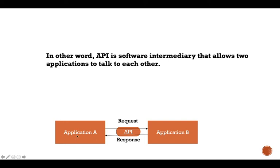Here you can see we have Application A and we have Application B. Application A wants to communicate with Application B. With the help of this API, Application A makes a request and this API sends that request to Application B. Then this API takes the response from Application B and sends it back to Application A.